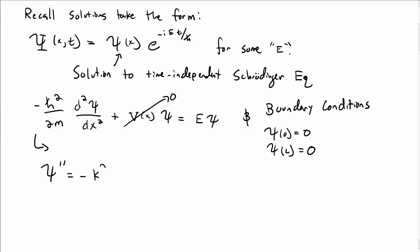This differential equation becomes ψ double prime equals minus k squared ψ, where k squared is 2mE over h-bar squared. I just moved all the constants over.